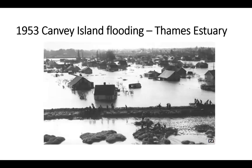Just a quick history of flooding in the last century: there was a pretty significant flood in 1928 — sadly 14 people were drowned. But of course the big flood that all of us old enough remember is the 1953 flood, when 300 people drowned from roughly Lincolnshire around to part of Kent and on the east coast. Sadly, 59 people were drowned on Canvey Island. At that stage there was no early warning system — no one in the south knew what was coming.